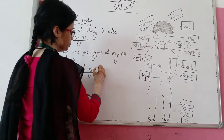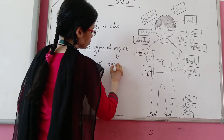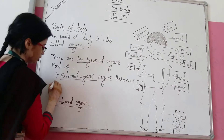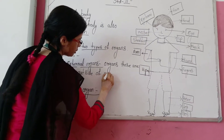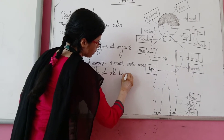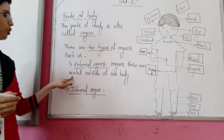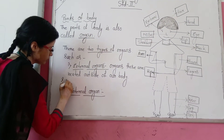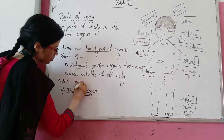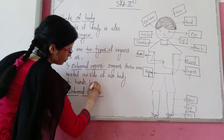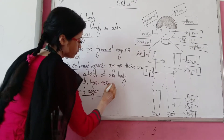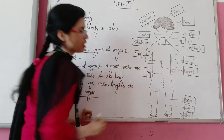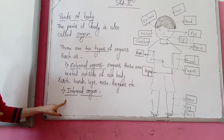What are external organs? Organs that are located outside of our body — we can see these body parts easily — such as hand, legs, nose, fingers, etc. All of these are external organs that we can see easily.